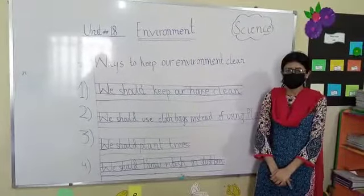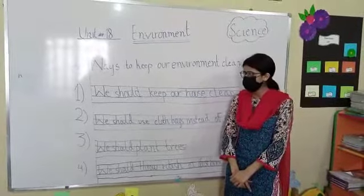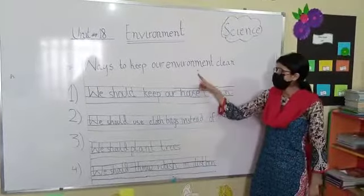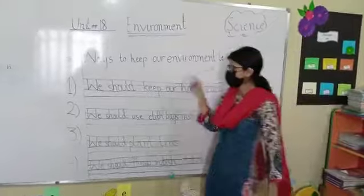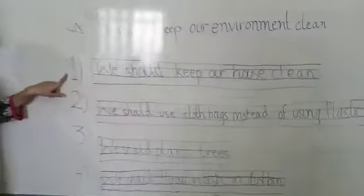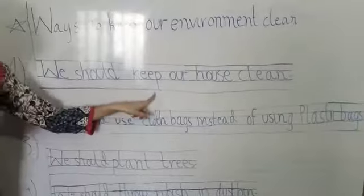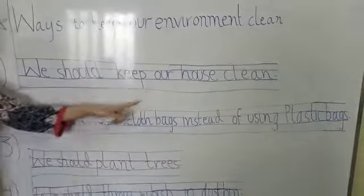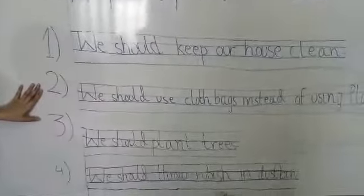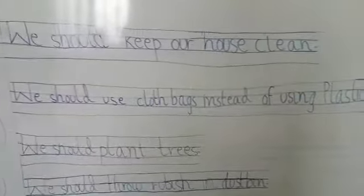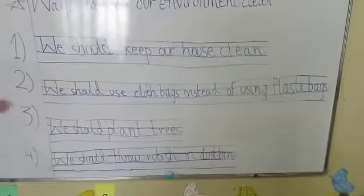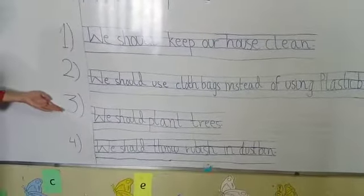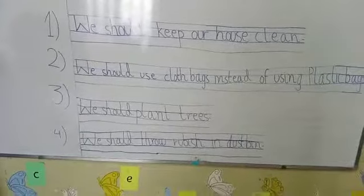Now, it's our job to keep the environment clean. Here are some ways to keep our environment clean. Number 1: We should keep our house clean. Number 2: We should use cloth bags instead of using plastic bags. Number 3: We should plant trees.